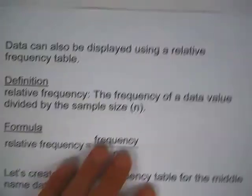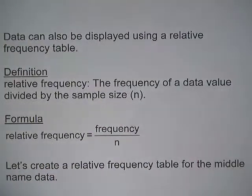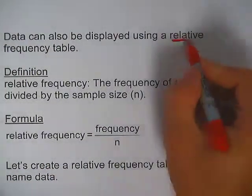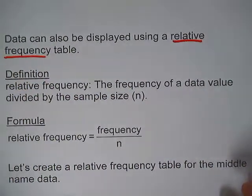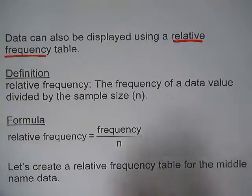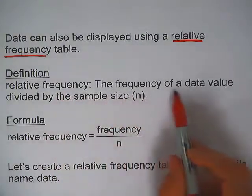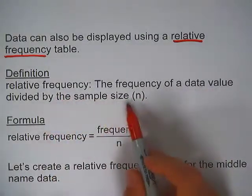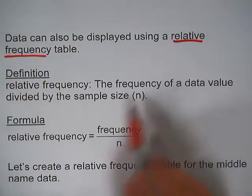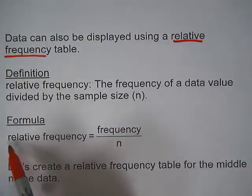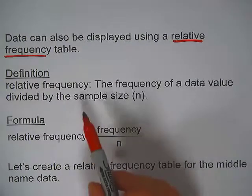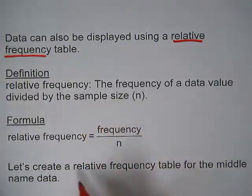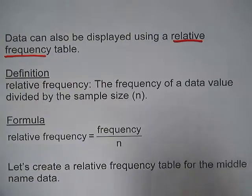Data can also be displayed using a relative frequency table. So let's define now what relative frequency is. Relative frequency is the frequency of a data value divided by the sample size n. So just an easy formula here. Relative frequency equals frequency over n, where n is the sample size. So let's create a relative frequency table for the middle name data.